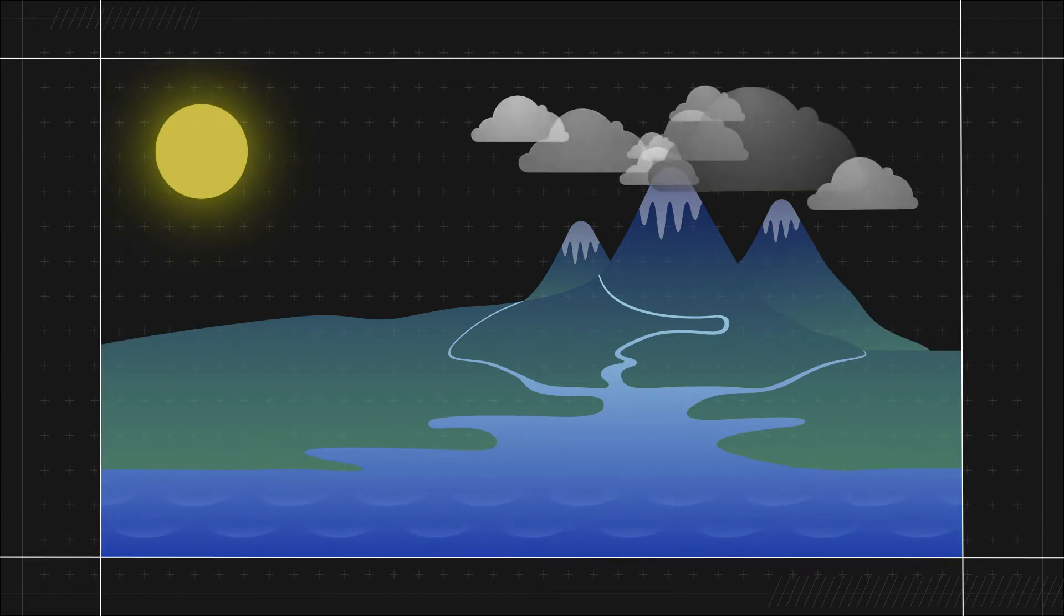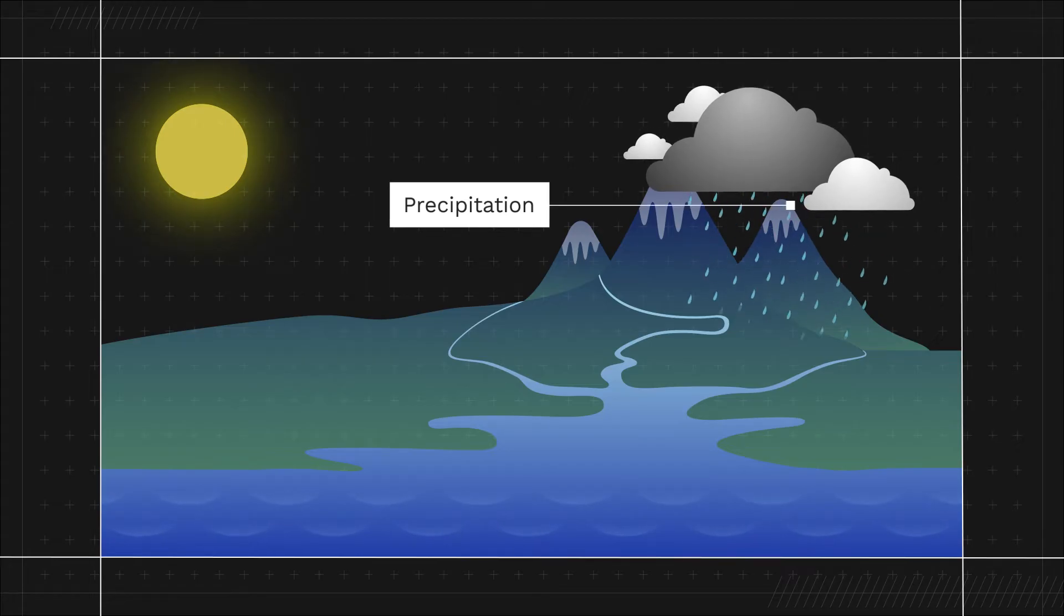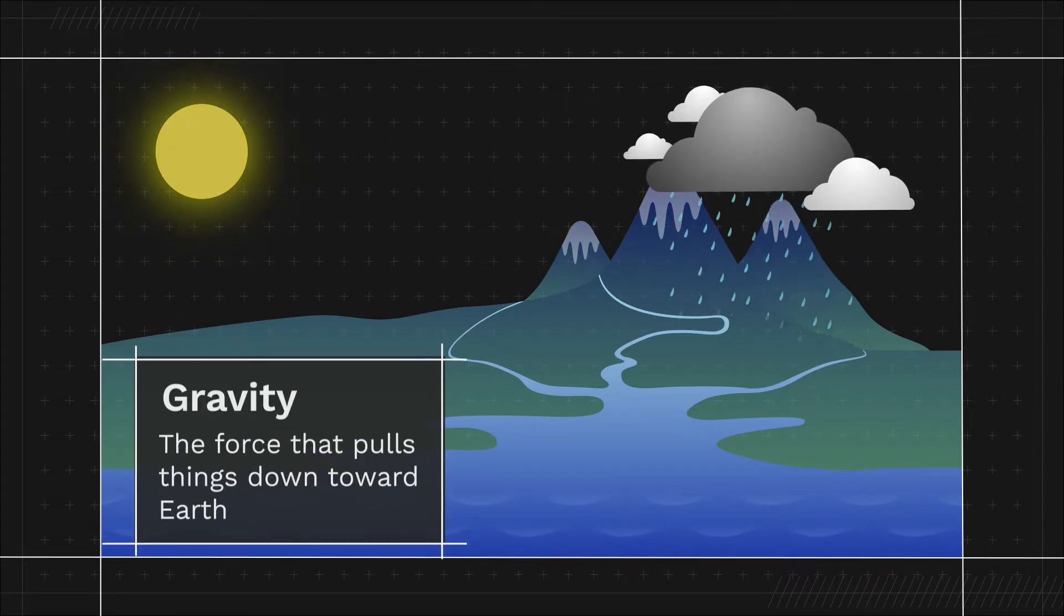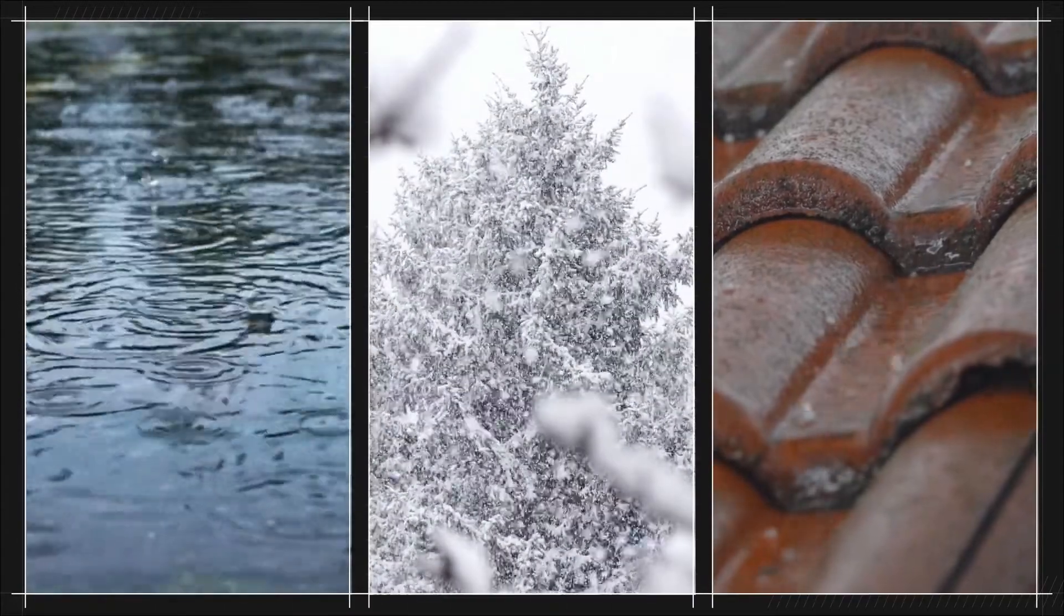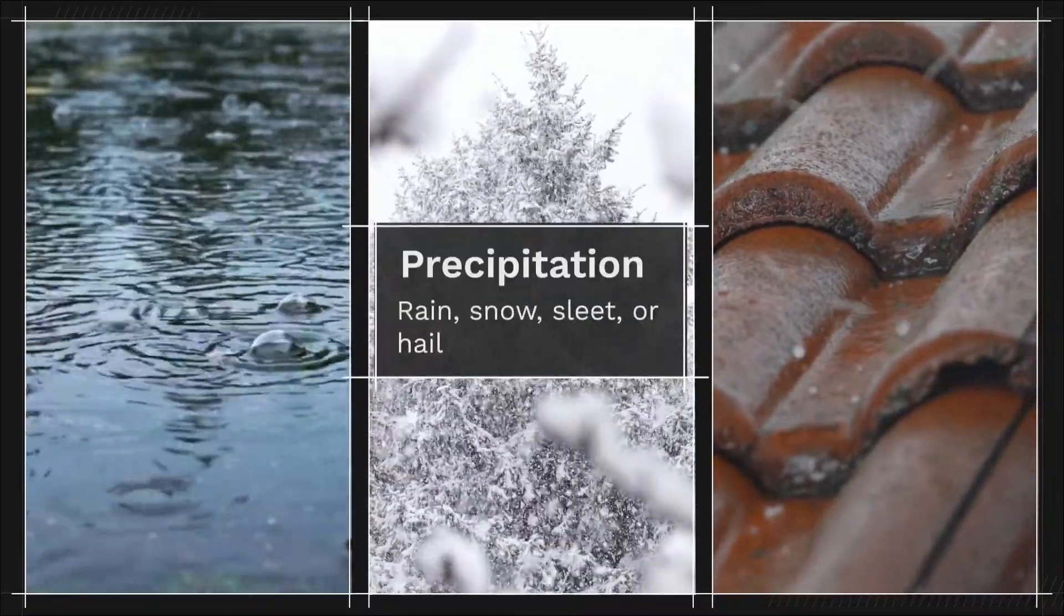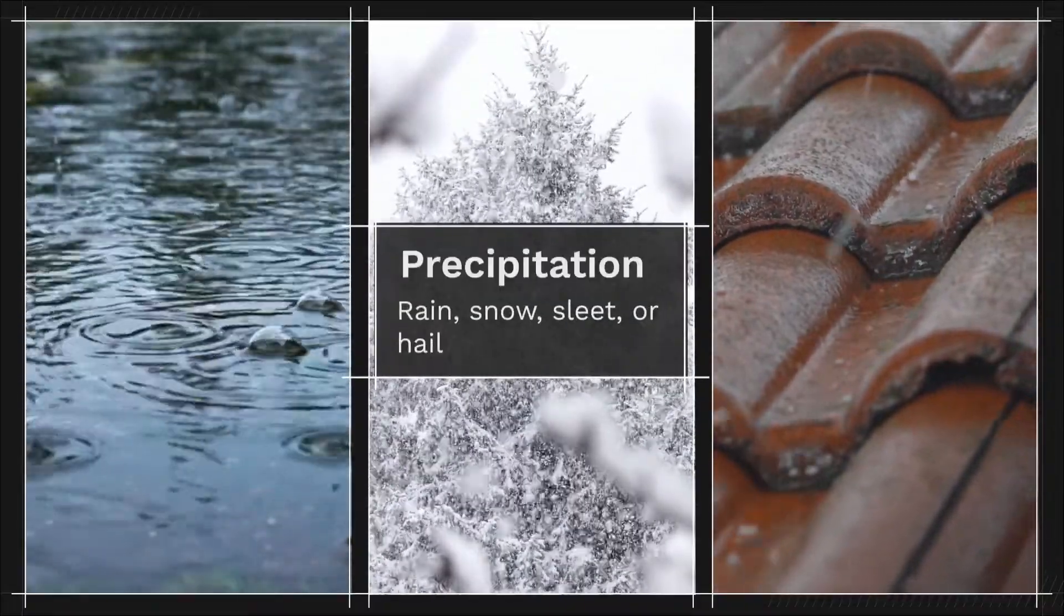Eventually, the water droplets and clouds become so large and heavy that something pulls them back down to Earth. What force pulls things down toward the Earth? Gravity is the force that pulls things down toward Earth, and water droplets and clouds are no exception. Water droplets and clouds precipitate or fall back to Earth. Precipitation can be rain, snow, sleet, or hail, or some combination of these.